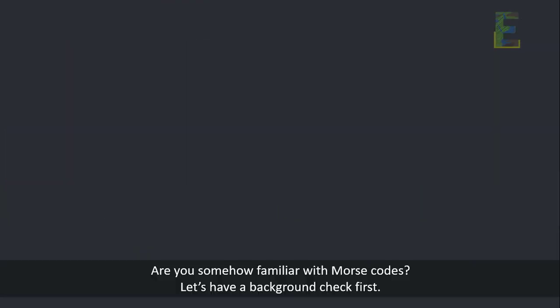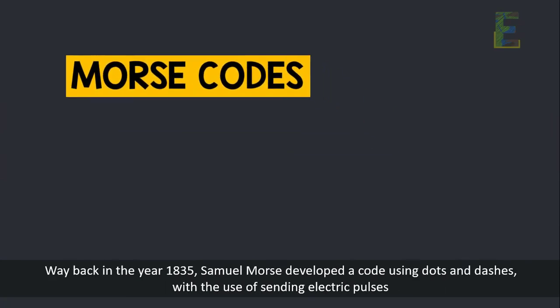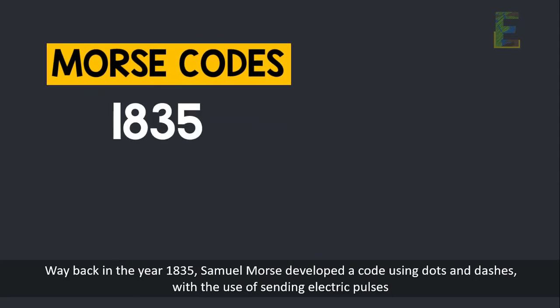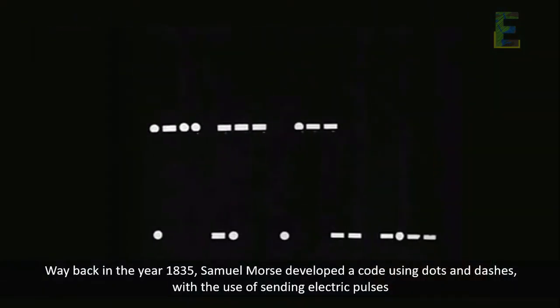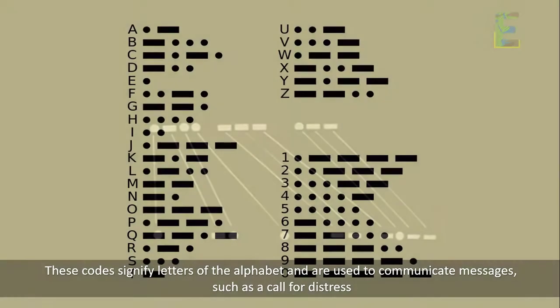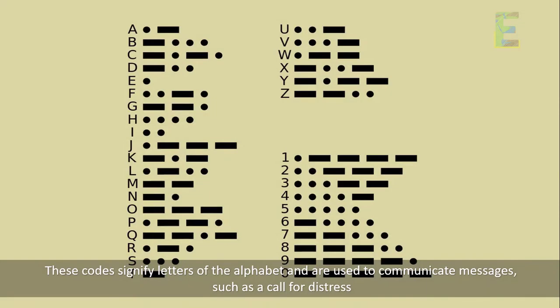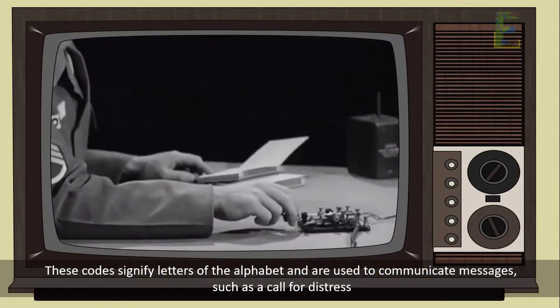Are you somehow familiar with Morse codes? Let's have a background check first. Way back in the year 1835, Samuel Morse developed a code using dots and dashes, with the use of sending electric pulses. These codes signify letters of the alphabet and are used to communicate messages, such as a call for distress.